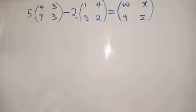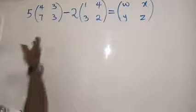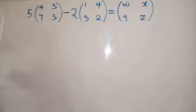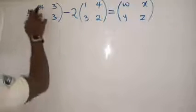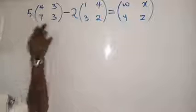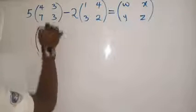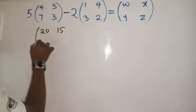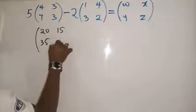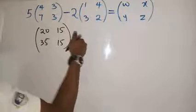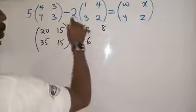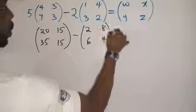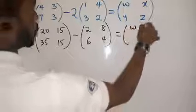If you are asked to find the matrix WXYZ, you will solve it the way we did the previous example. In this case, you will have 5 multiplied by each of these elements inside. So you have 20, 15, 35, and 15. This 2 multiplied by each of these will give you 2, 8, 6, and 4. And that is what the matrix will be.